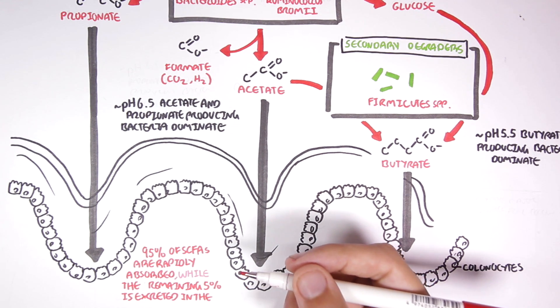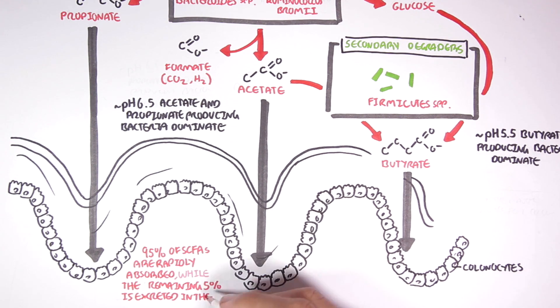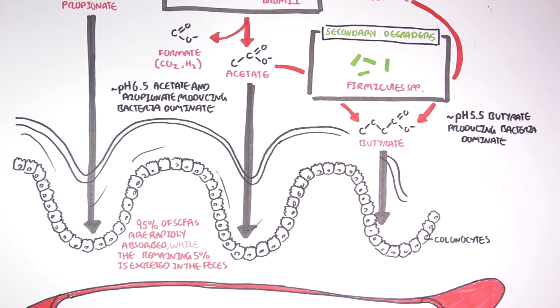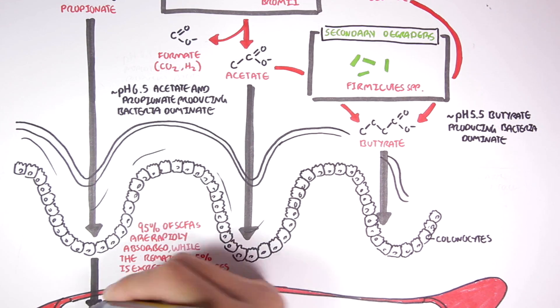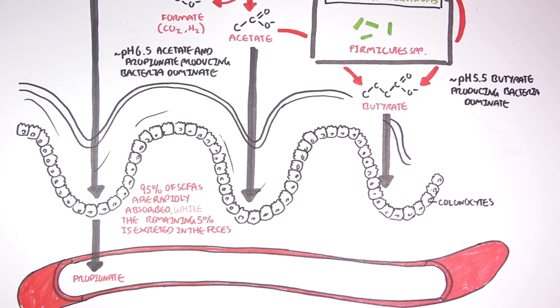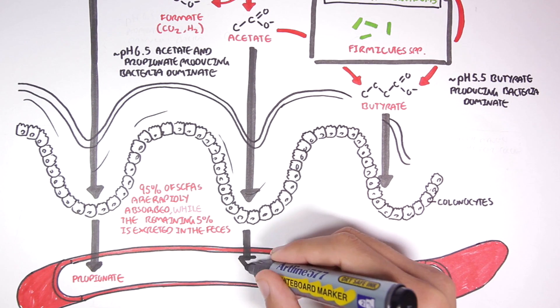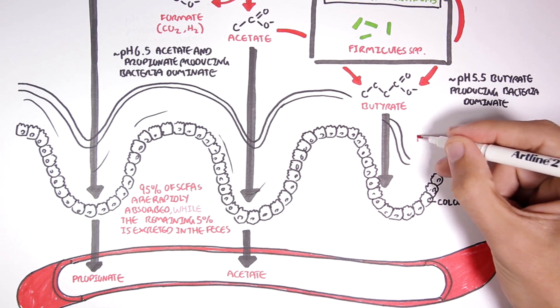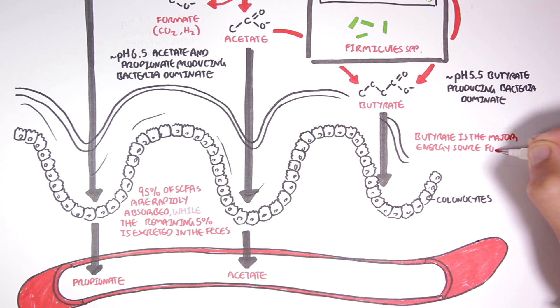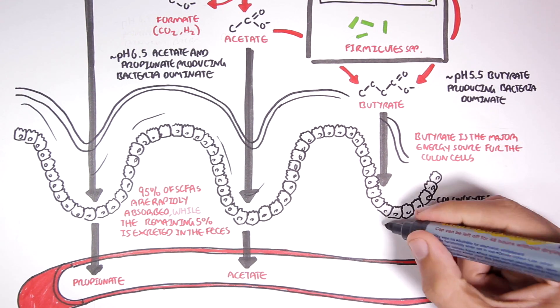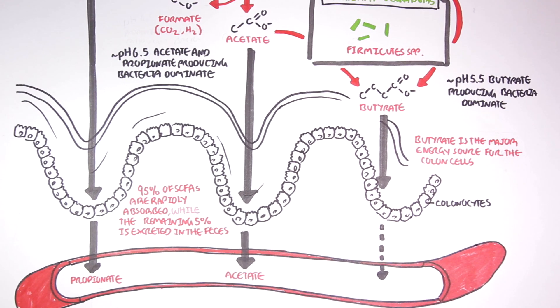After being absorbed by the colon cells, the short-chain fatty acids can enter circulation, and enter the portal vein, which is blood traveling towards the liver. Here, propionate and acetate enter the portal blood. Butyrate, on the other hand, is the major energy source for colon cells, resulting in low concentrations of butyrate in portal blood.